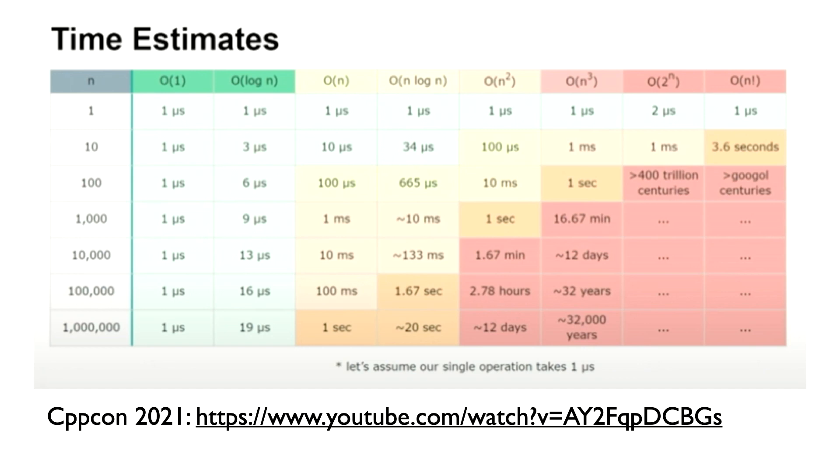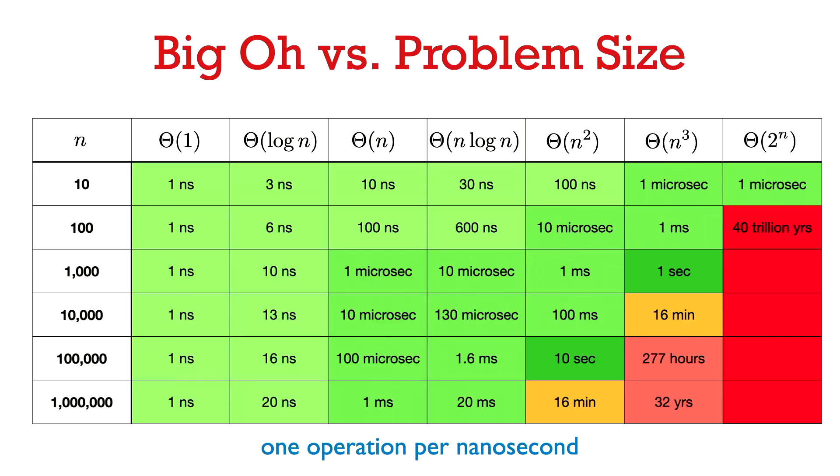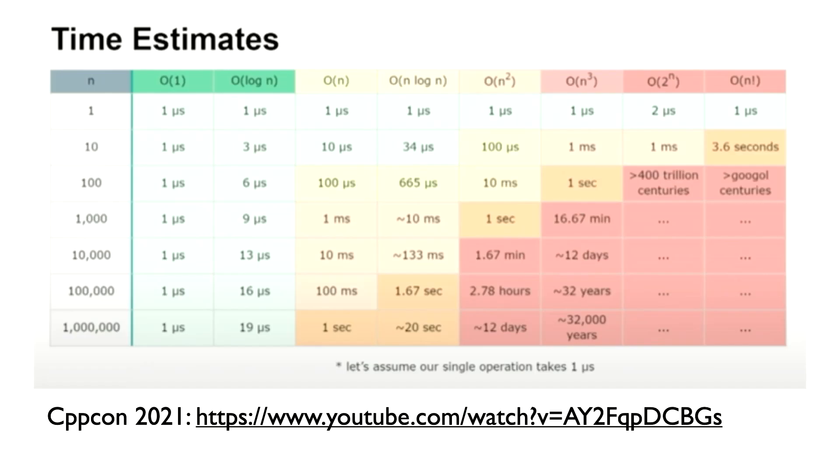Likewise, on my laptop, it takes a theta of n times log n sorting algorithm around 50 milliseconds to sort a vector of a million elements. On this slide, it says 20 seconds. And on this slide, it says 20 milliseconds. So 50 milliseconds, the actual time that I saw, is much closer to what's on the previous slide.